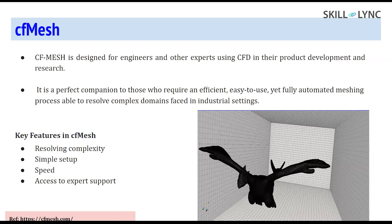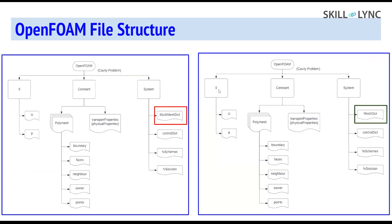The OpenFOAM file structure contains three major folders: zero, constant, and system. Zero contains initial conditions - velocity and pressure. Constant contains polyMesh or mesh information and transport properties; for turbulent flow it also has turbulent properties. System contains meshDict (blockMesh, snappyHexMesh, or cfMesh's meshDict), controlDict for time discretization controls, fvSchemes for gradient and diffusion term schemes, and fvSolution for solver tolerances and linear solver declarations. The only difference when using cfMesh versus blockMesh or snappyHexMesh is the meshDict file.